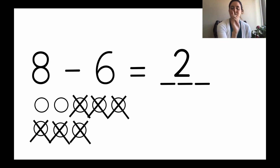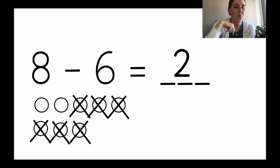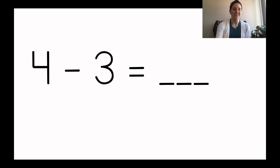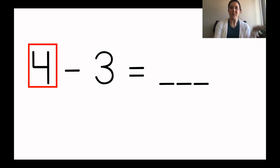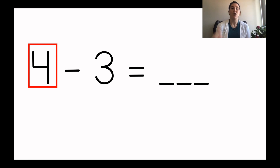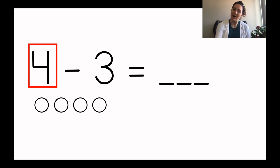Very good, kindergartners. You drew eight circles to start, then crossed off six, and figured out it equals two because there are one, two circles left. Let's do one more problem together. Let's read the number sentence: four minus three equals blank. We need to draw four circles first because the first number in our number sentence is four — that's how many we draw to start. Draw four circles on your paper: one, two, three, four.